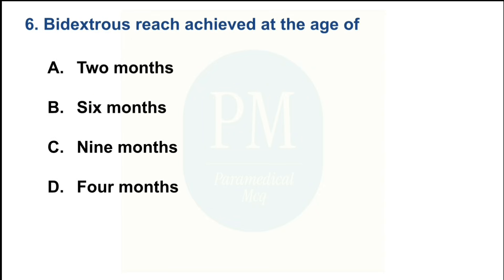Rejected at the age of: Option A — 2 months; Option B — 6 months; Option C — 9 months; Option D — 4 months. The correct option is Option D: 4 months.